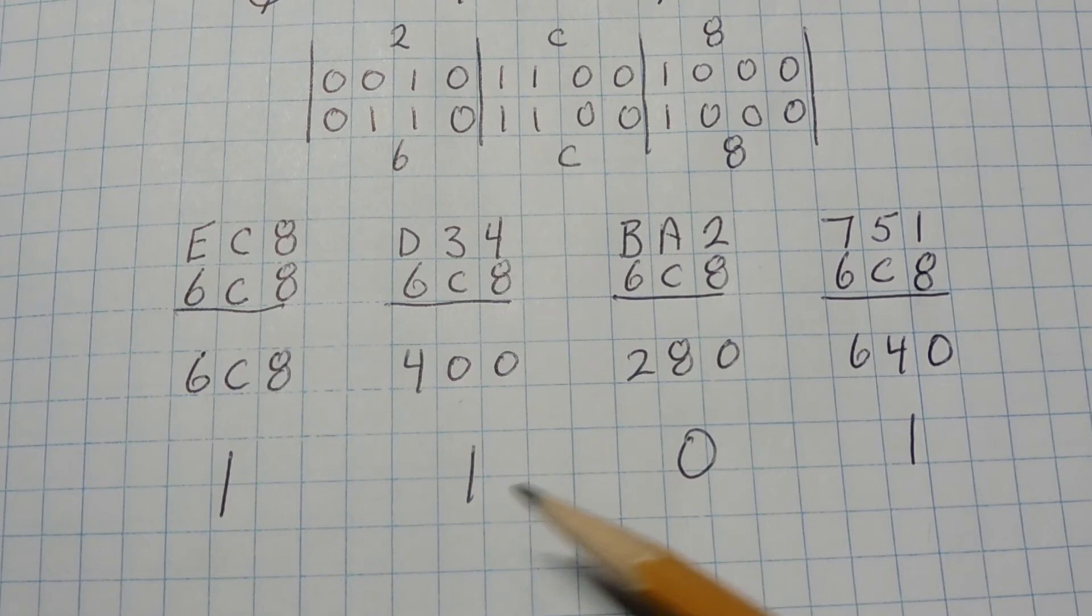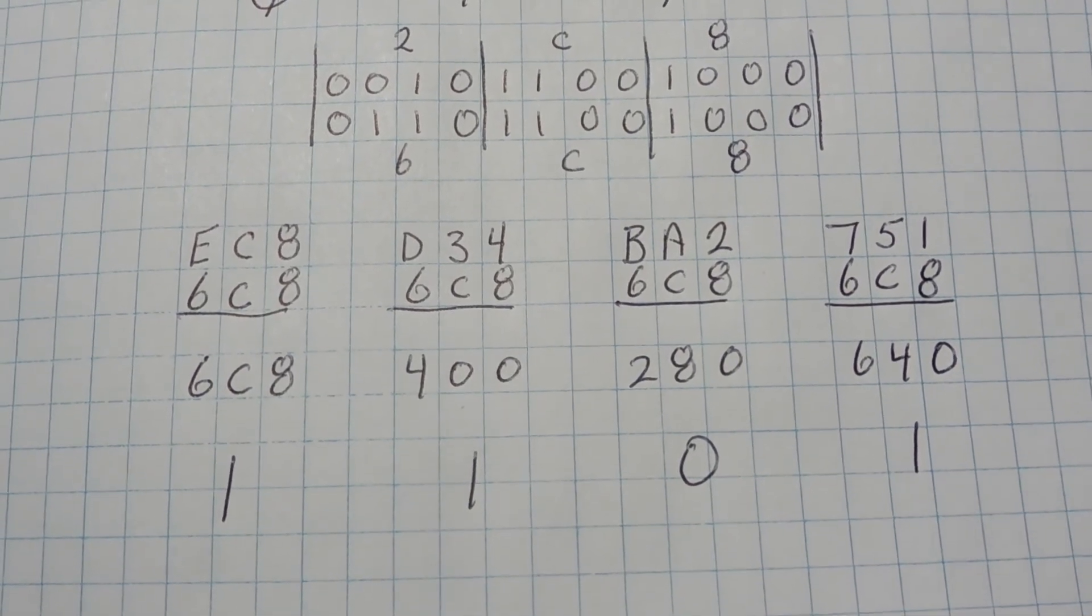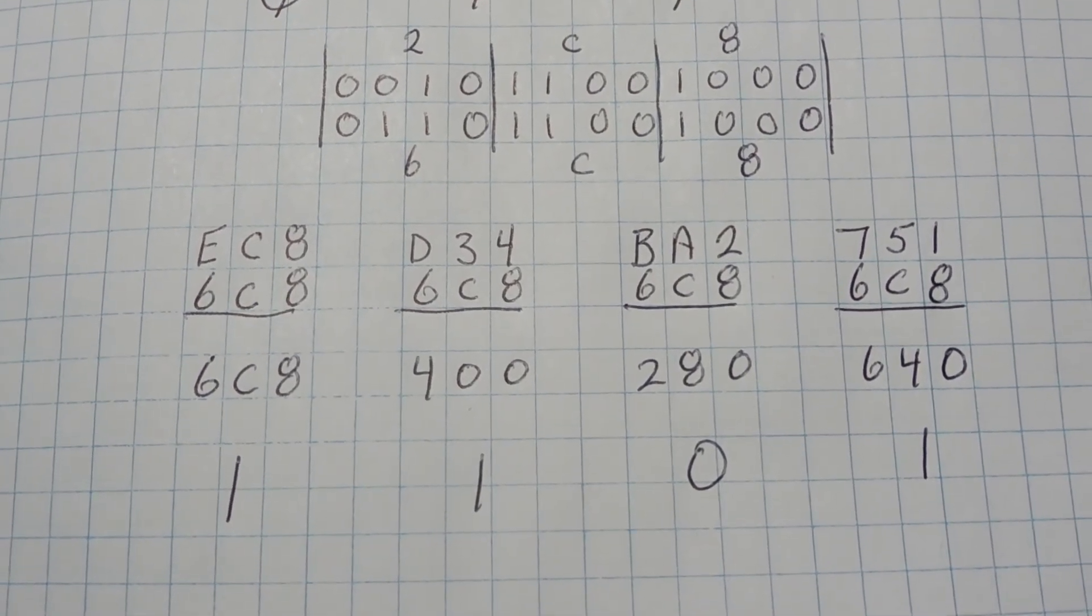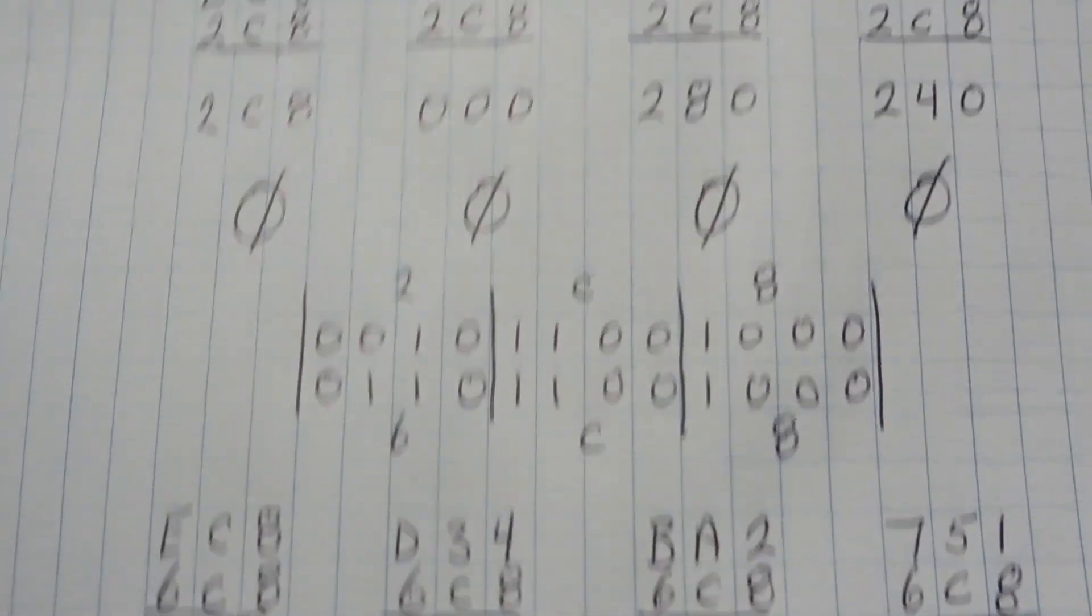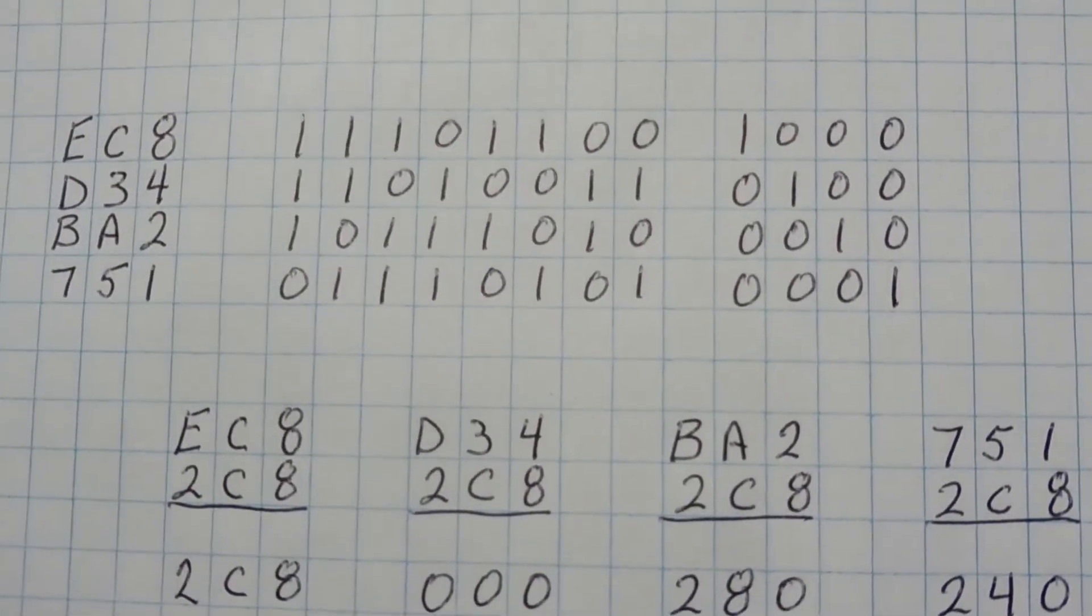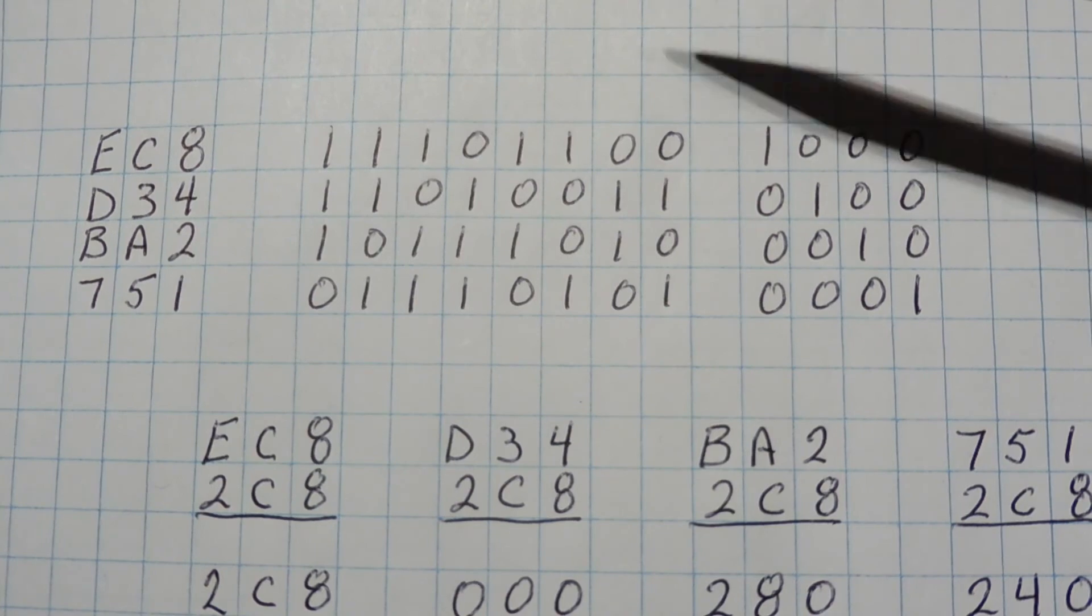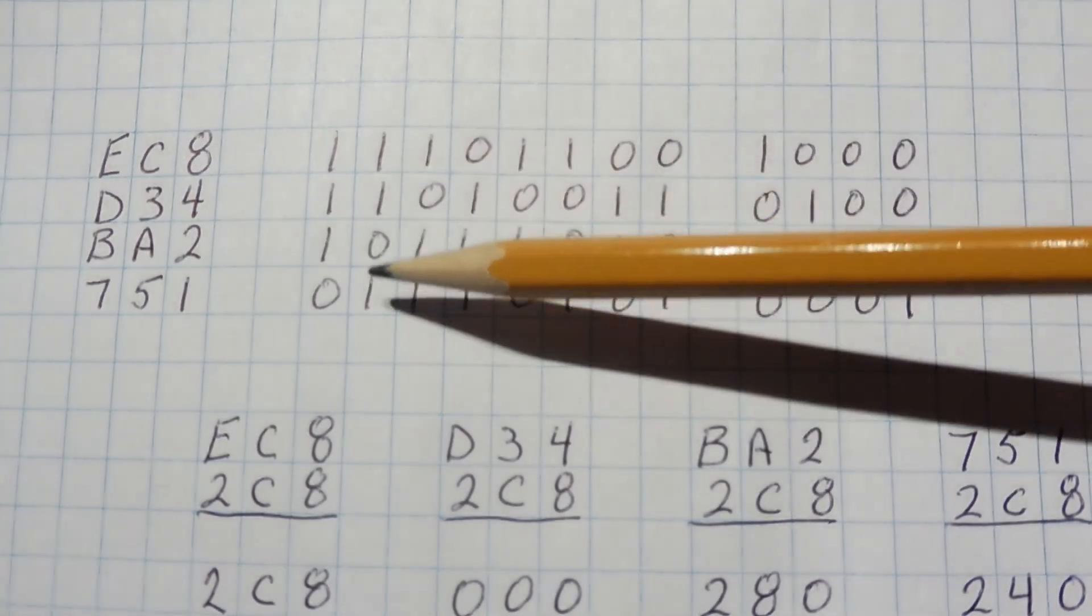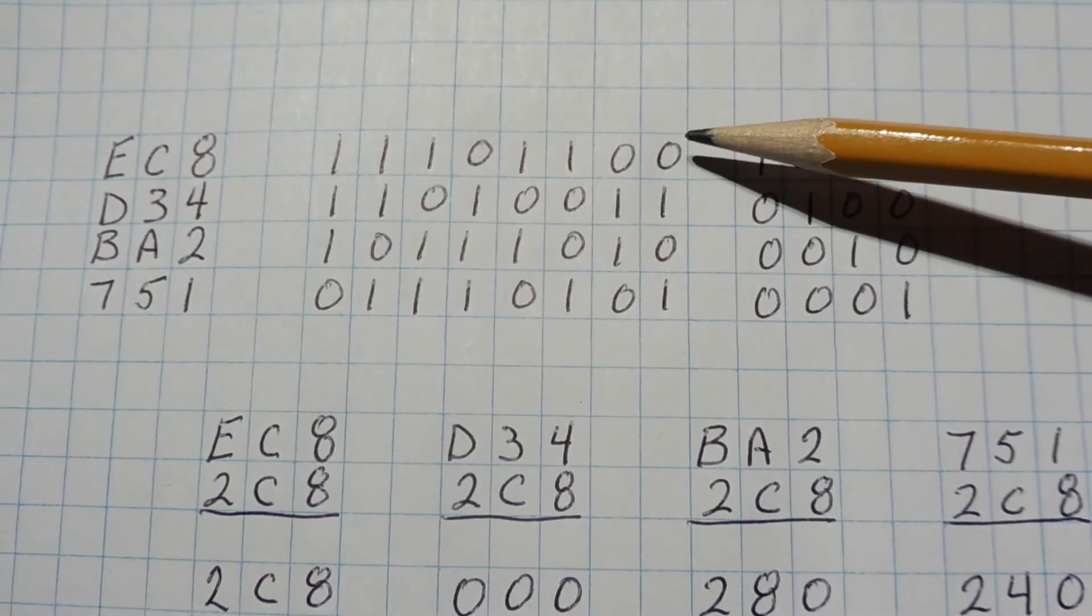Now we get a different value. We get 1, 1, 0, 1 for even an odd number of 1s. So now we take that 1, 1, 0, 1 and we look at the matrix. Now we look for the column, 1, 1, 0, 1. And here it is, 1, 1, 0, 1. And that's in bit location, bit 0, 1, 2, 3, 4, 5, 6. That's bit 6.